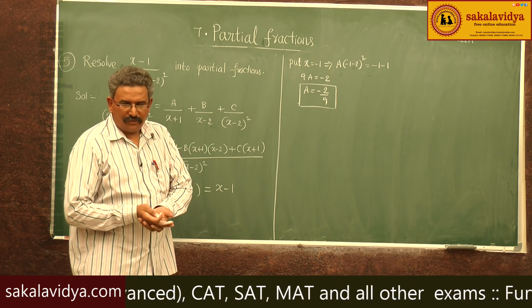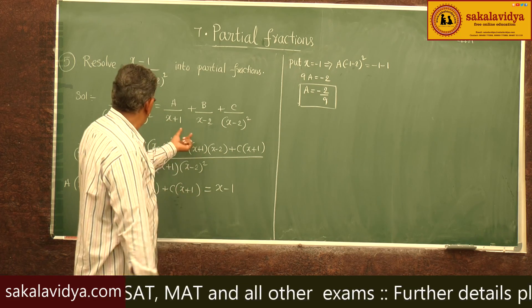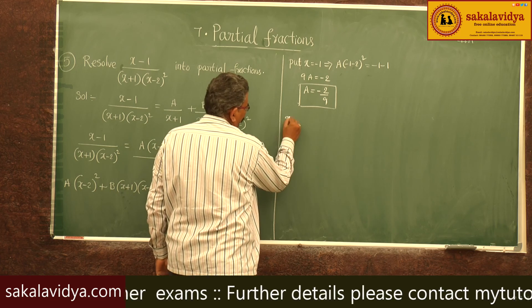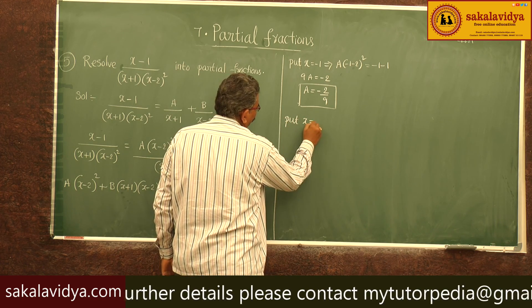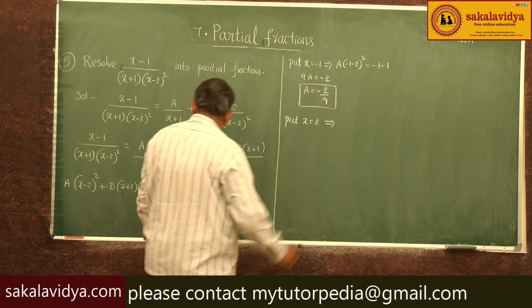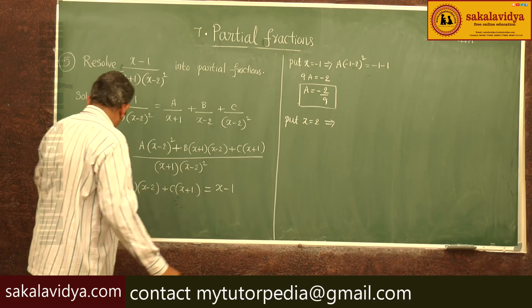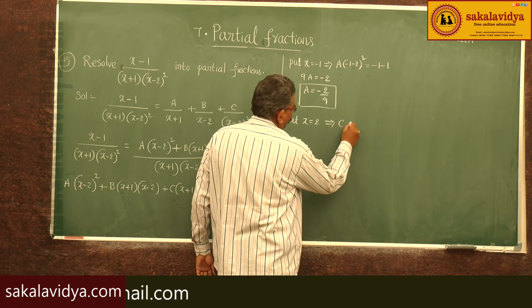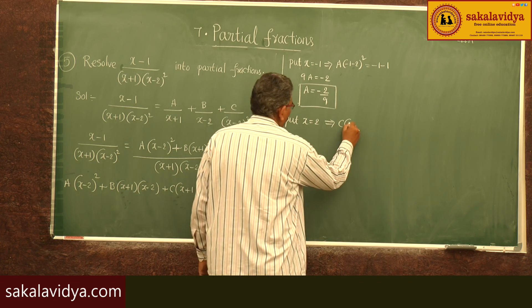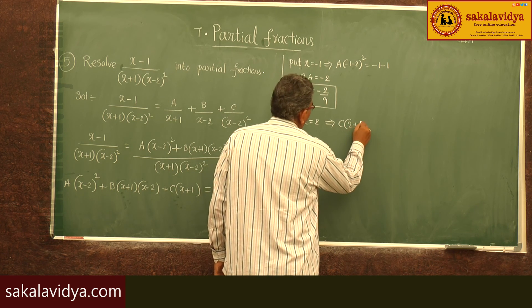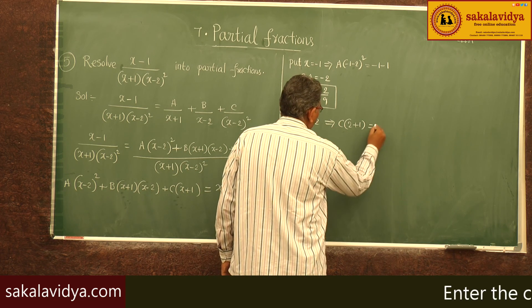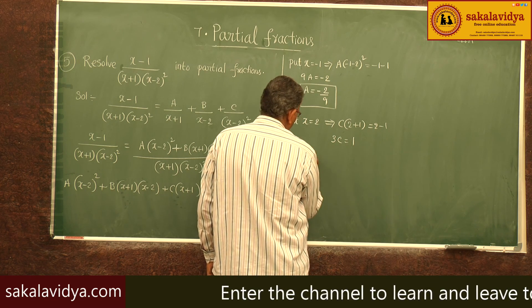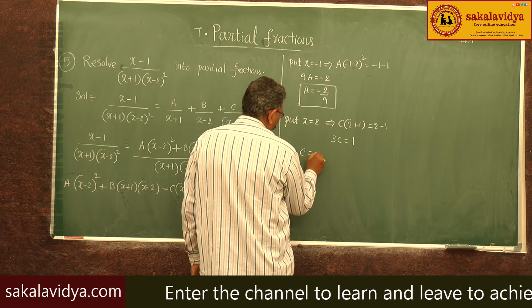Now substitute the zero of (x minus 2). Put x equal to 2: the A and B terms become 0, giving C times (2 plus 1) equals 2 minus 1. So 3C equals 1, therefore C equals 1 by 3.